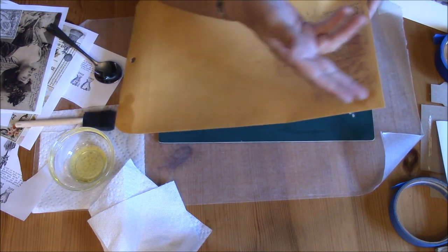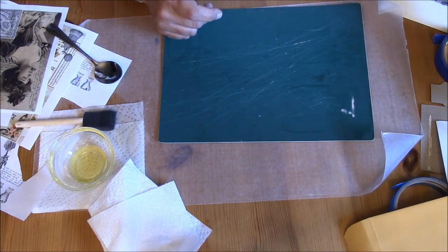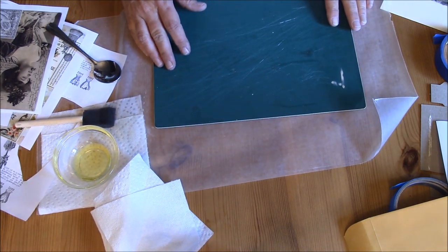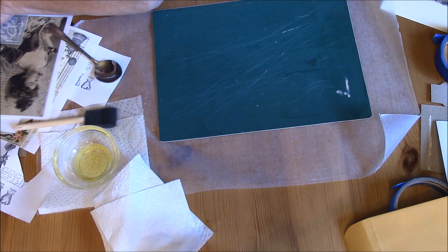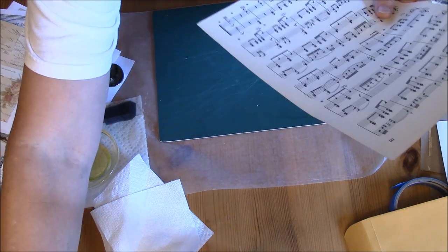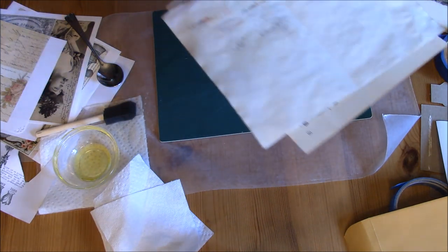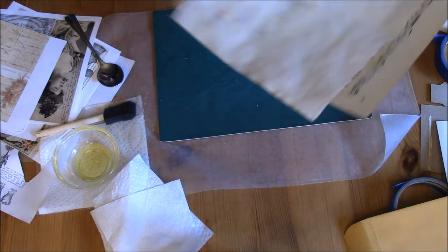If I did, I would just be rubbing harder through the whole thing. So there you have two layers of Citrus Solv transfers. You could create an awesome collage effect on your journal covers without having to worry about your edges coming up because Mod Podge might not have hit all the edges. You're not going to have to worry about bubbles.